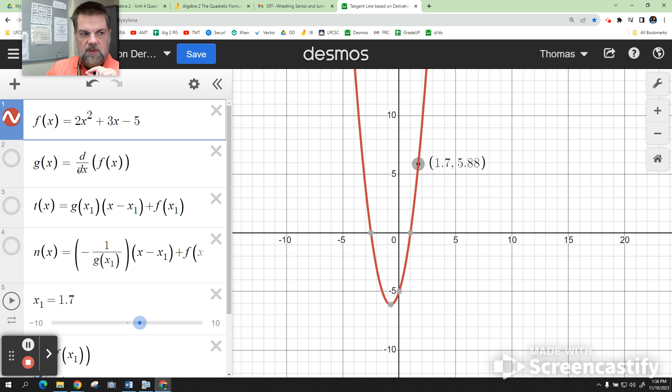we know that the slope of the tangent line is the derivative evaluated at a certain value for x. When you put that in the point-slope form, you get y equals the slope, which is the derivative evaluated at a number,